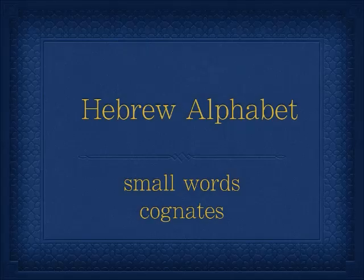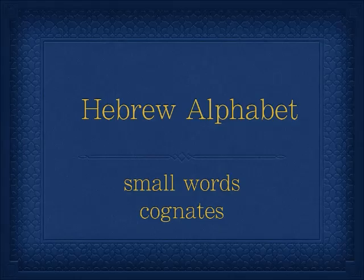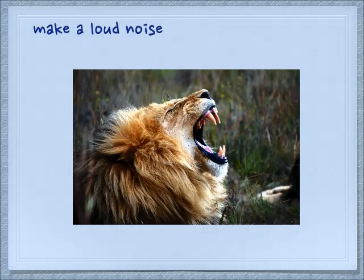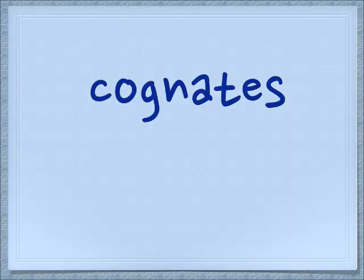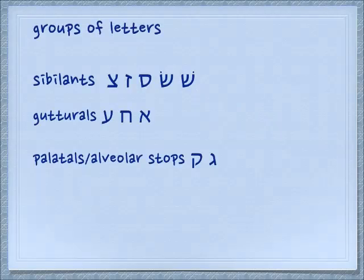Shalom. Today we're going to look at some small words and further investigate what it means to have cognates. These words are all going to be about making a loud noise. I've talked in other places about cognates where the substitution of different letters still leads us to a similar meaning word. So we don't randomly substitute letters in one word, but we substitute them according to the groups that they're in.